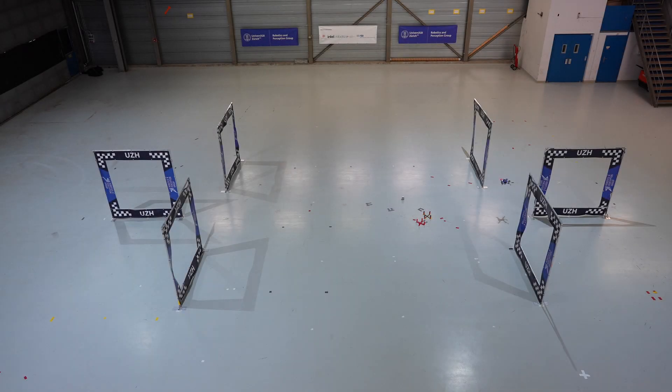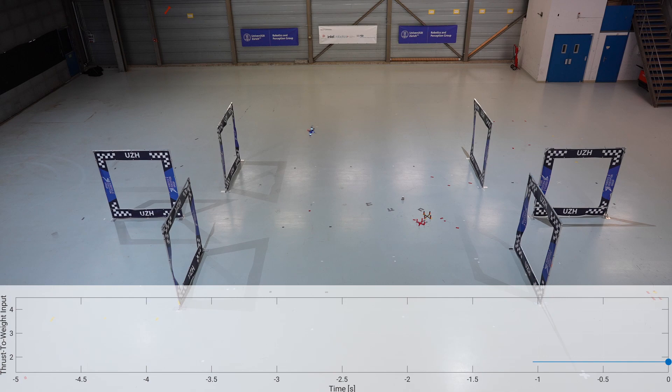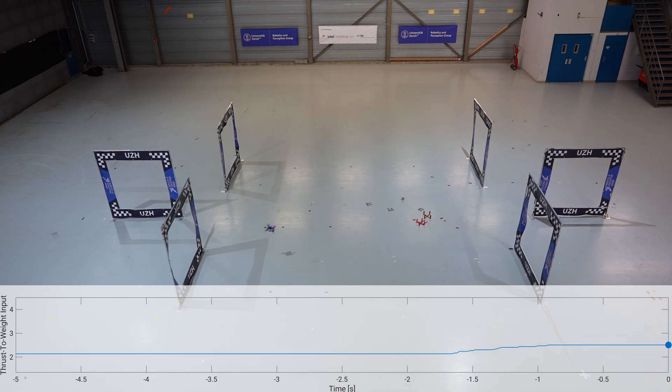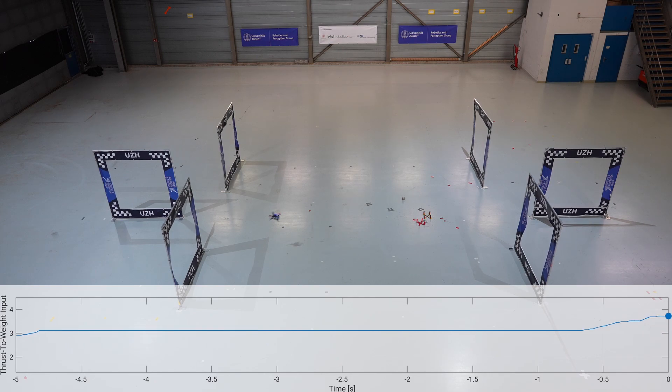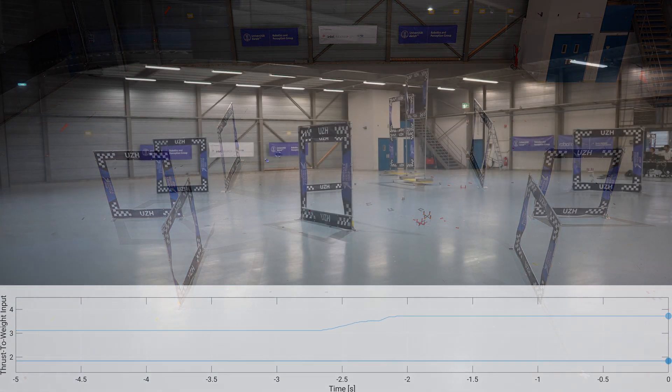We validate the performance of our approach in real-world experiments on an autonomous racing quadrotor. In the video sequences, we change the maximum thrust-to-weight ratio throughout the flight. The plot shows the thrust-to-weight ratio in the last five seconds, and the dot corresponds to the current setting. The difference in thrust-to-weight ratio can be observed clearly from the audio, and also from the speed at which the drone flies.